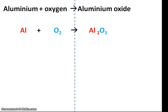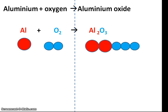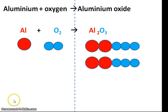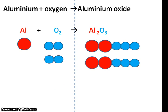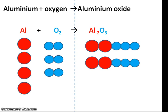Let's try another one. Aluminium reacts with oxygen to make aluminium oxide. As you can see, this is not a balanced equation. So to start with, I'm going to add another lot of aluminium oxide. Now I'm going to add two more lots until I make six. On this side of the equation I have four aluminiums, so on this side I need to add two, three, four.